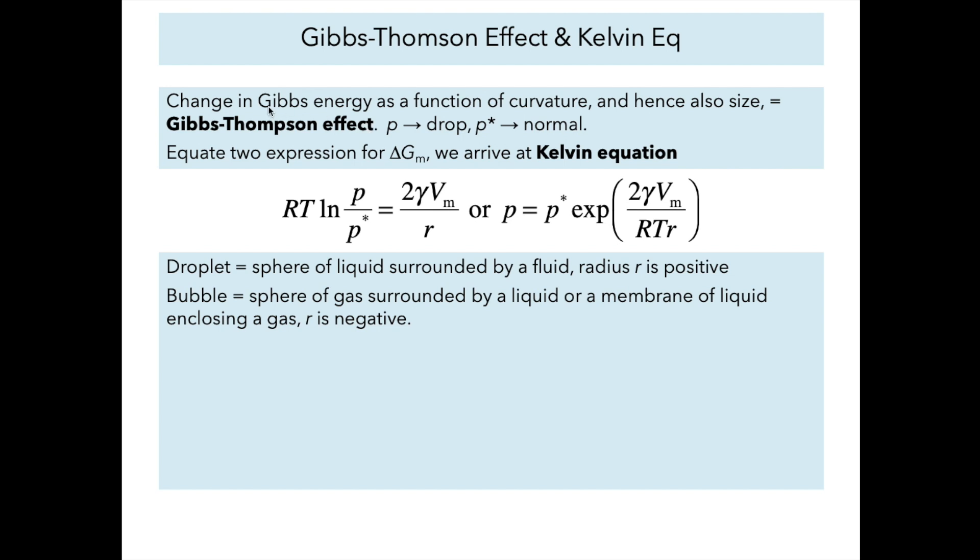Because the Gibbs energy is a function of curvature and therefore the size of the particles, the equilibrium vapor pressure of a particle depends on its size. The vapor pressure within a drop equals the normal vapor pressure times this exponential term. A droplet is a sphere of liquid surrounded by a fluid with positive radius r. We can also apply this equation to bubbles where we have a sphere of gas surrounded by a liquid or membrane, and then r is negative.